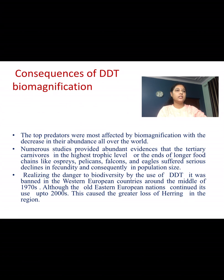The consequences of DDT biomagnification: top predators were most affected, with decreases in their abundance worldwide. Numerous studies provided abundant evidence that tertiary carnivores at the highest trophic level — end of longer food chains — like ospreys, pelicans, falcons and eagles suffered serious declines in fecundity and consequently in their population size. Realizing the danger to biodiversity, DDT was banned in Western European countries around the middle of the 1970s, although the old Eastern European nations continued its use up to the 2000s, causing greater loss of herrings in the region.